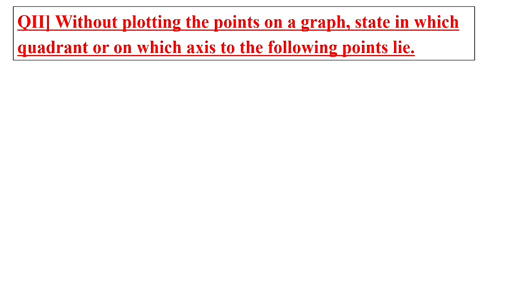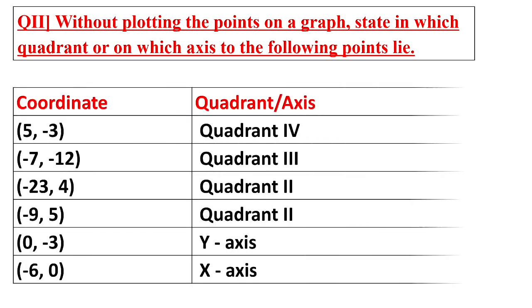Question number two: without plotting the point on a graph, state in which quadrant or on which axis the following points lie. The four quadrant rules: first quadrant — both coordinates positive; second quadrant — x negative, y positive; third quadrant — both negative; fourth quadrant — x positive, y negative. First point (5, -3): x is positive, y is negative, so it lies in the fourth quadrant.